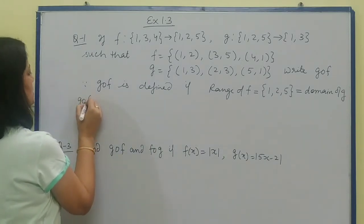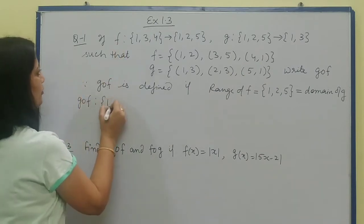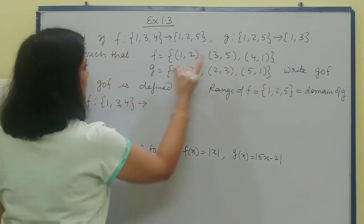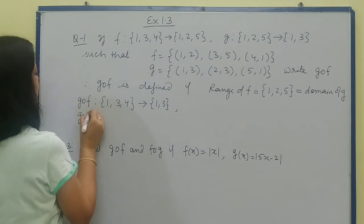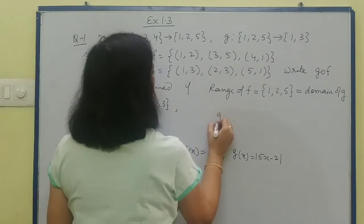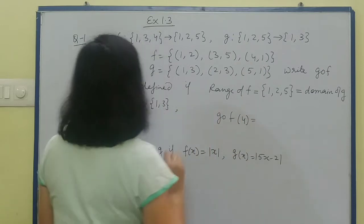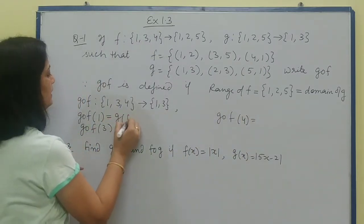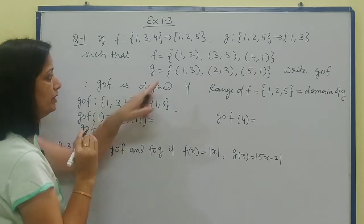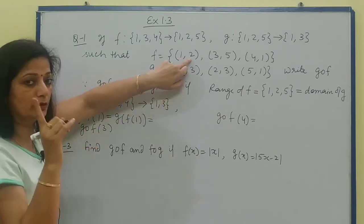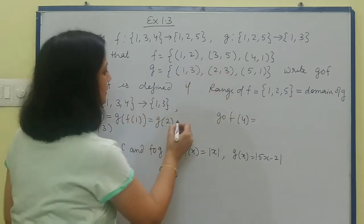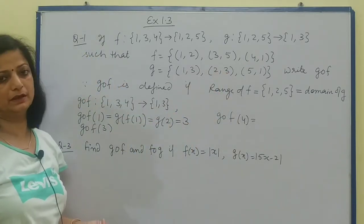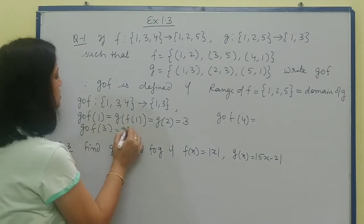Now you need to find g composite f, which relates from {1,3,4} to the last set {1,3}. How to find it? First find g composite f(1), then g composite f(3), then g composite f(4). How can we find these values? We write it as g of f(1). What is f(1)? Its ordered pair is with 2, so you'll get value 2. Now g(2), the pair of 2 is with 3, so you'll get value 3.